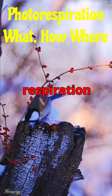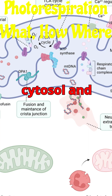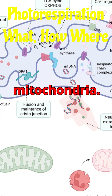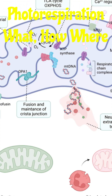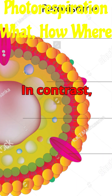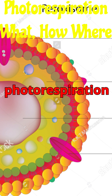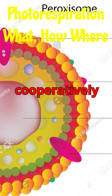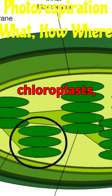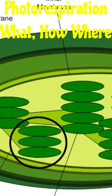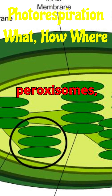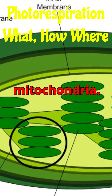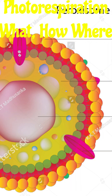Normal respiration occurs in the cytosol and mitochondria. In contrast, photorespiration occurs cooperatively in chloroplasts, peroxisomes, and mitochondria.